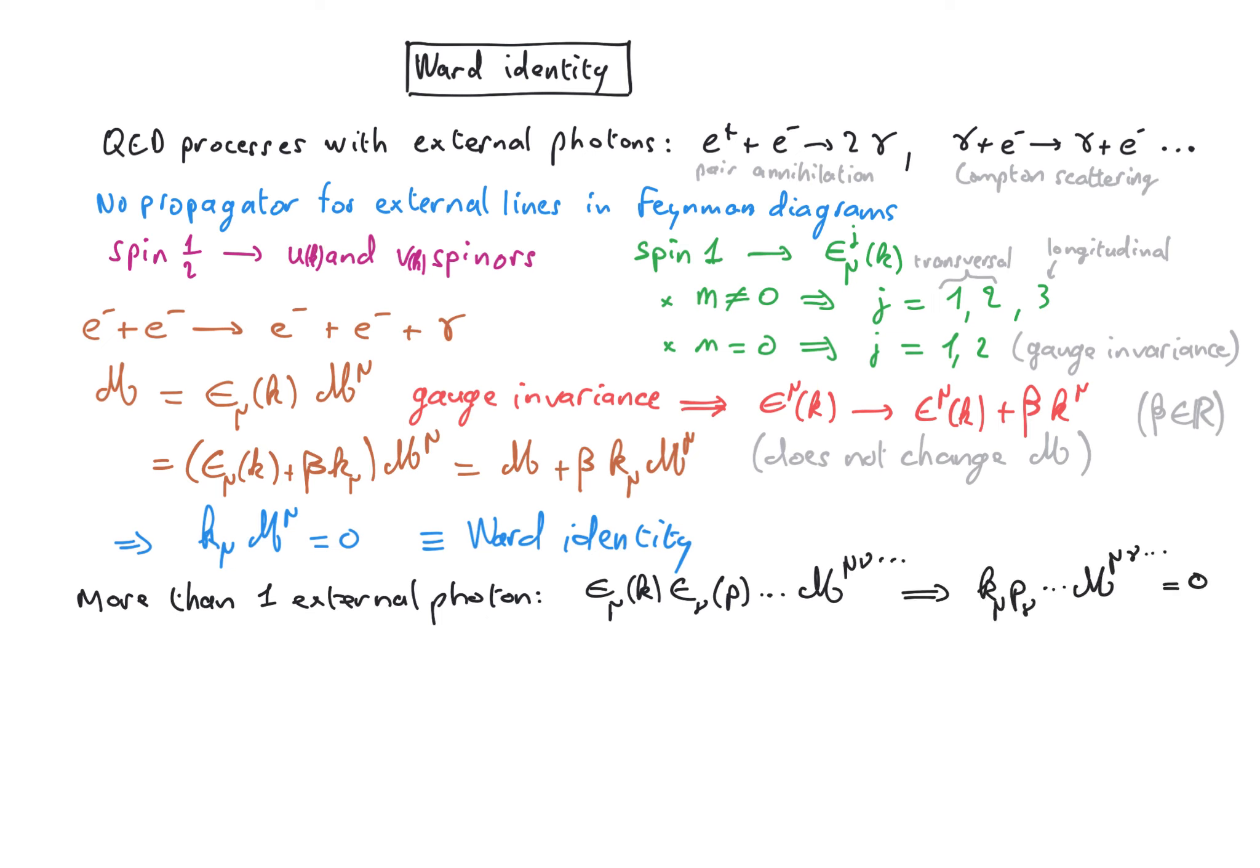The Ward identity is often useful in calculations with external photons because that can be used to set some terms to zero. It can also be used to check that your final amplitude is correct. In particular, you can change the polarization by the momenta and you should verify that this is indeed zero. And note finally that the Ward identity is a consequence of gauge invariance and therefore it only applies for massless particles.